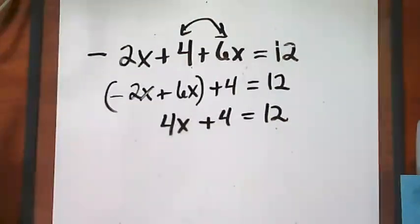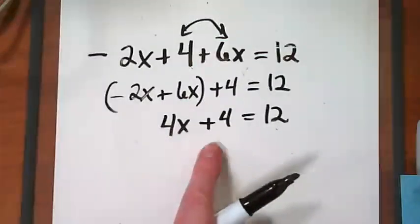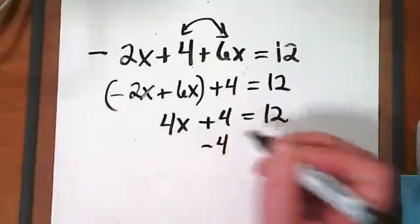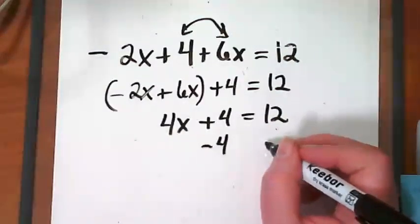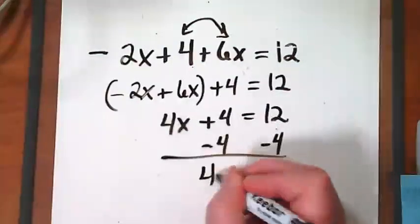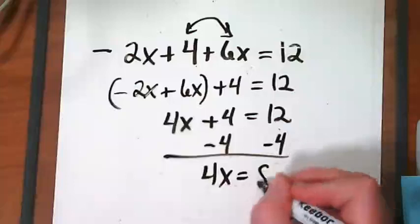Now I've combined like terms. We can go back to what we were doing on Friday. Next thing I want to do is inverse relations, right? I want to get a 0 here. So I'm going to do what to that 4? Subtract it. If I do it to the left side of the equation, I have to do it to the right.